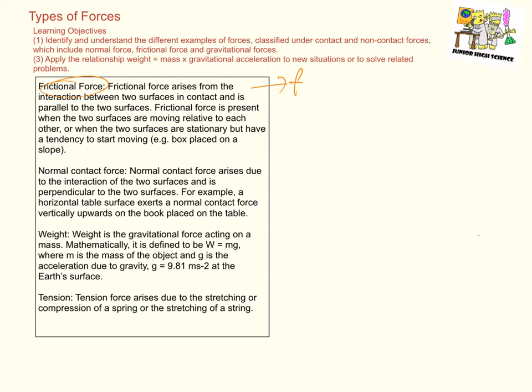But be careful, even when two surfaces are stationary there can be frictional force. A very good example is when I have a slope and a box and the box remains stationary. What keeps the box stationary and doesn't allow it to roll off the slope is actually frictional force, which is pointing along the slope, parallel to the two surfaces of the box and the slope.